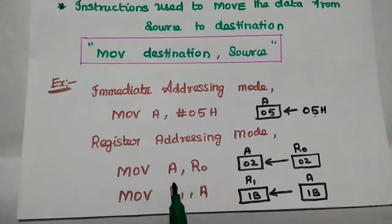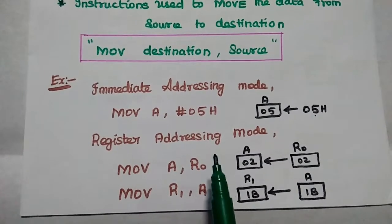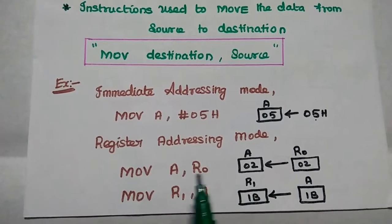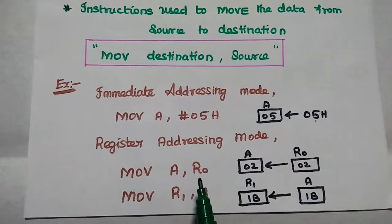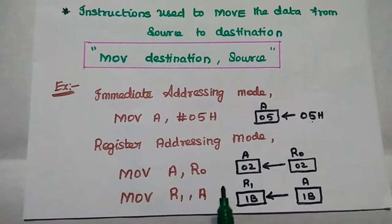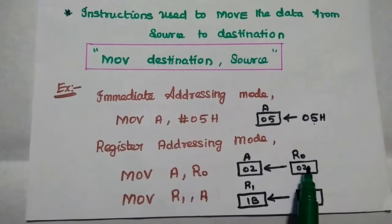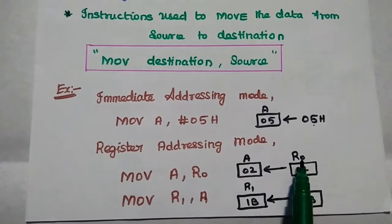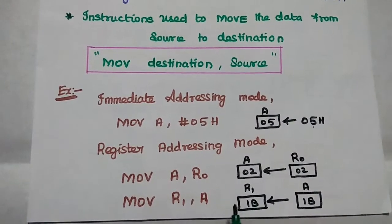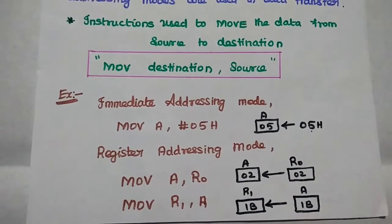Next is register addressing mode. In this one, we can transfer the content through the register. For example: MOV A, R0 or MOV R1, A. Here we are going to transfer the data from R0 register to this accumulator, or from this accumulator to R1 register.